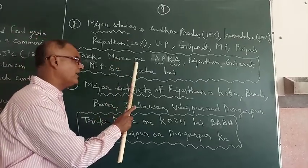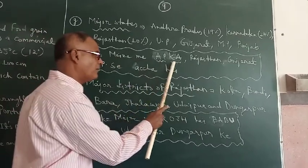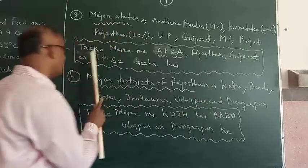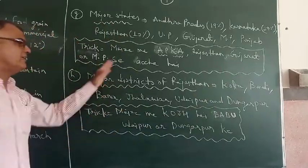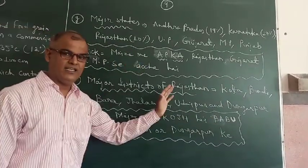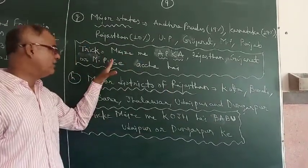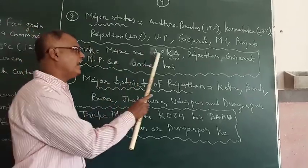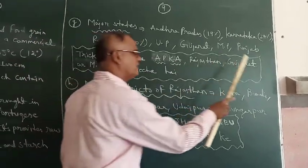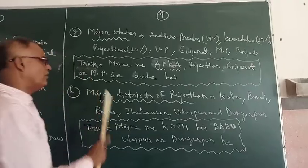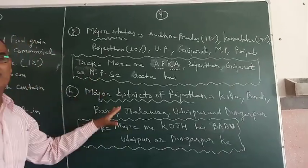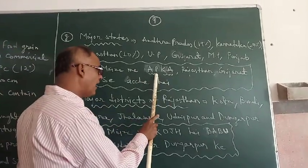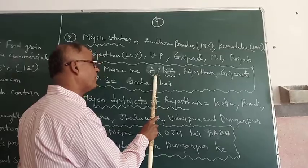The mnemonic sentence is: 'Maze mein aapka Rajasthan, Gujarat aur Madhya Pradesh se achha hai.' In this, 'Aap' stands for Uttar Pradesh, 'R' for Rajasthan, 'A' for Andhra, 'S' for states, and 'K' for Karnataka, helping you remember all major Maize producing states.